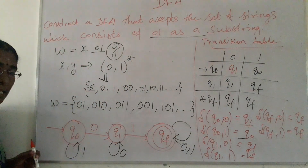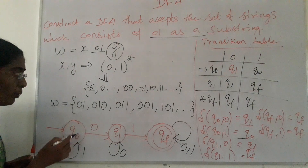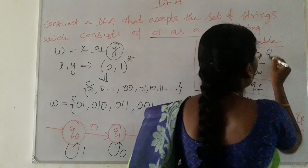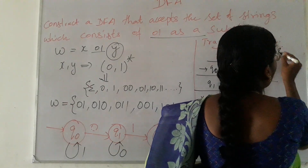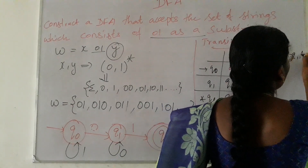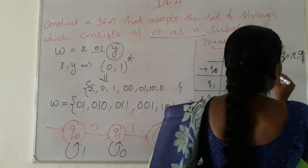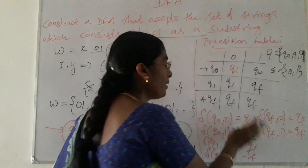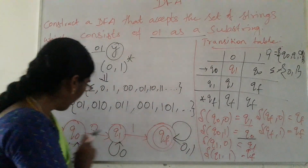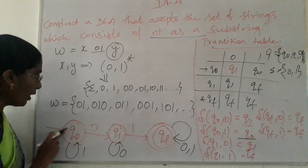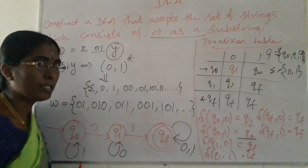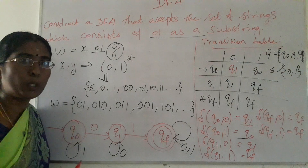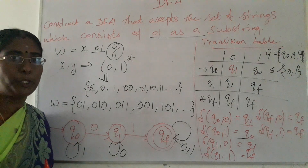The formal definition of this DFA: the set of states Q = {Q0, Q1, QF}. The alphabet Σ = {0, 1}. These are the transition functions. Q0 is the start state and QF is the final state. This is the DFA for accepting strings that consist of '01' as a substring. Thank you.